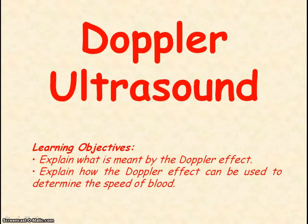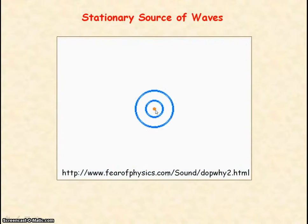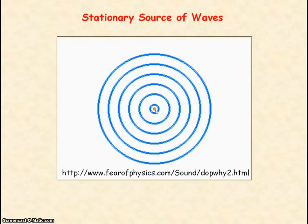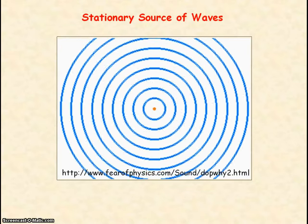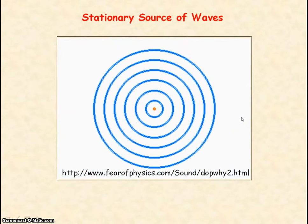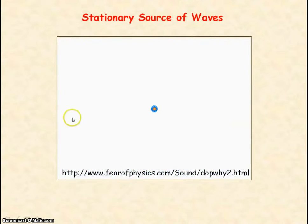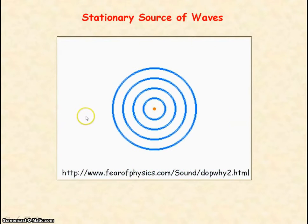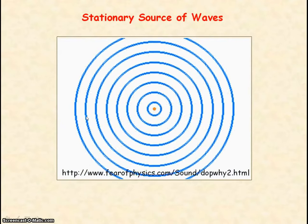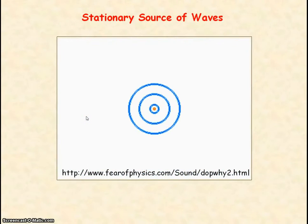We're going to be looking at Doppler ultrasound. Here we have a point source of waves which is stationary and it's emitting waves of frequency f. If you had an observer or a detector of waves placed in front or behind the point source, the observer or the detector would detect the same frequency f.